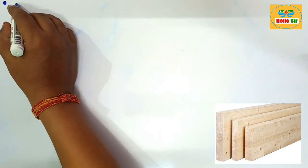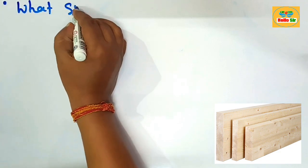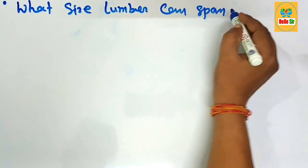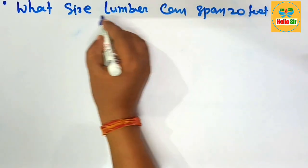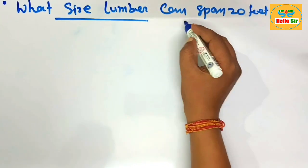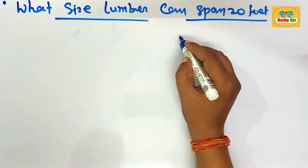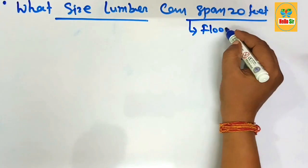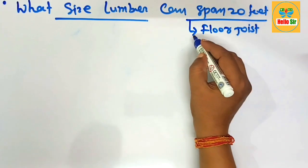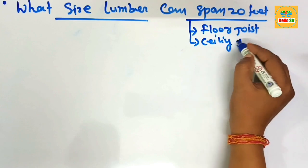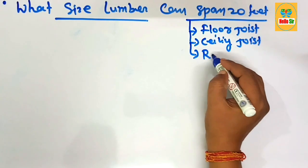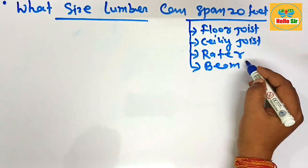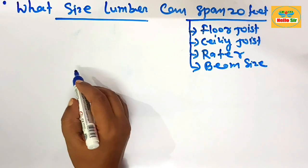Hey guys, today in this video you will know what size lumber can span 20 feet. We will figure out the size of lumber required to span about 20 feet in length — including the floor joist size, ceiling joist size, rafter size, and beam size required to span 20 feet.